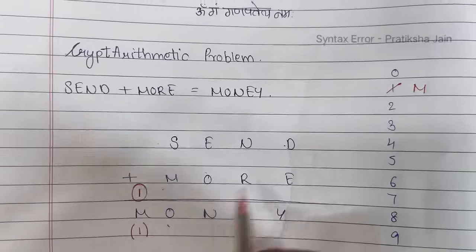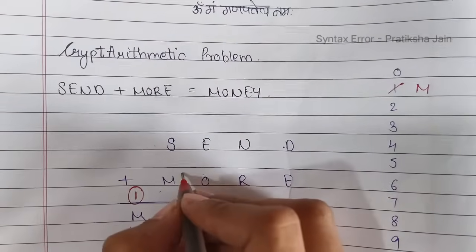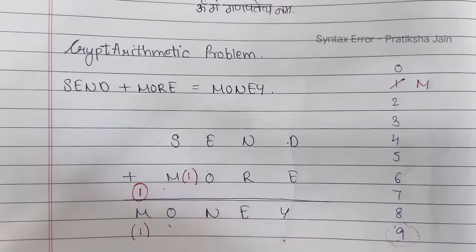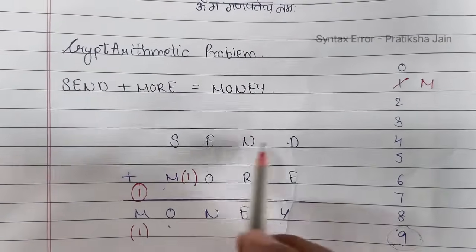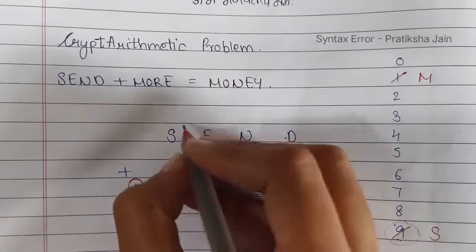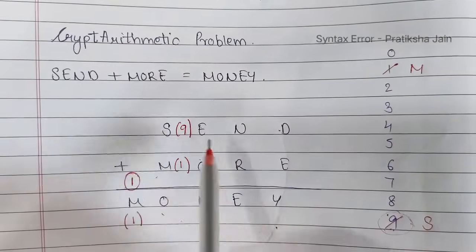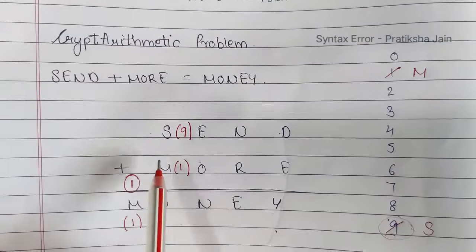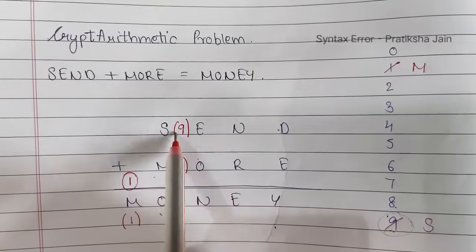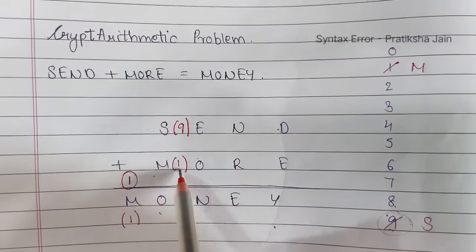Now if M became 1, so wherever there is M put 1. Always make use of the largest number that is available. Is 9 used for any of the letter? No right. So this 9 will get assigned to S. Let us assign it over here. Now why we took 9 over here? One reason is largest number and the second reason is if we take 8 for S, so 8 plus 1 becomes 9.